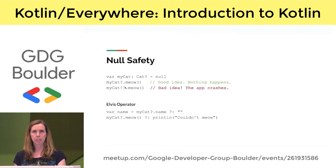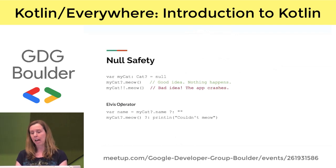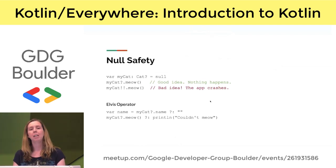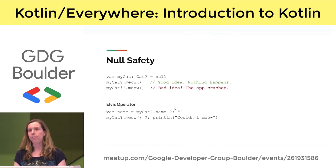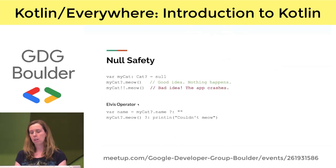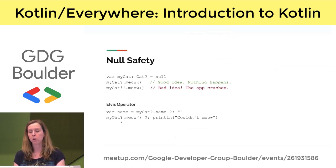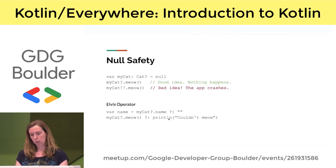Sometimes you don't just want to skip to the next line when you have a null — you want to declare some alternate behavior. That's when you use the Elvis operator, which is the question mark with colon. The Elvis operator is: if not null, do this; else do that. For example, if my cat is not null then use its name, else use an empty string. You can also use it for calling functions — if my cat is not null, meow; but if it is null, print 'couldn't meow'.